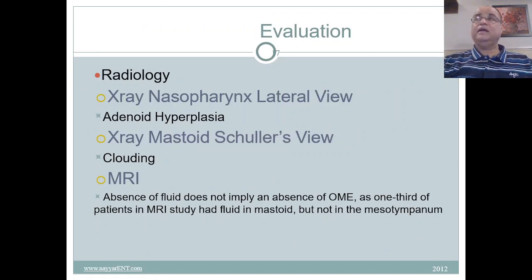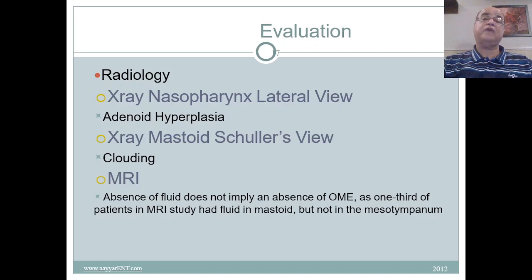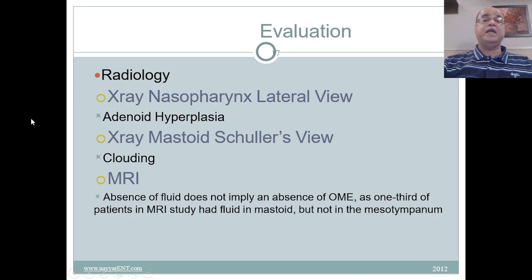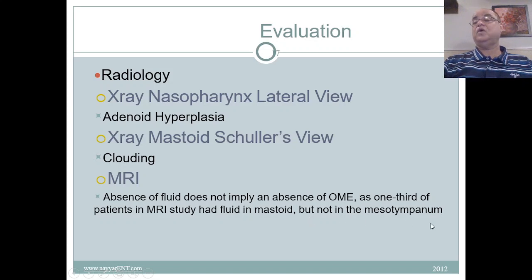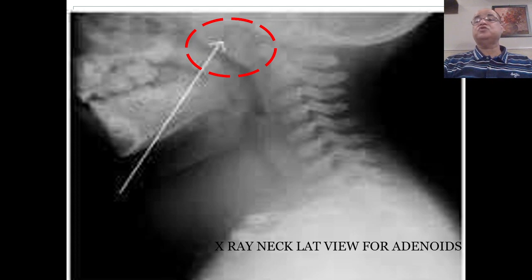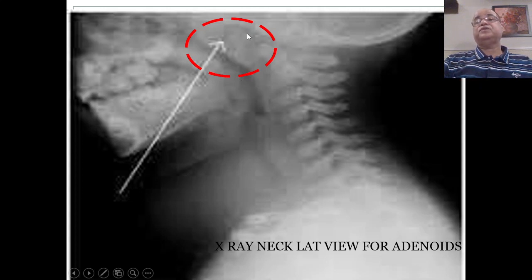In acoustic reflectometry, an acoustic otoscope measures reflected sound from the tympanic membrane — the louder the reflected sound, the greater the likelihood of middle ear effusion. If adenoid hypertrophy is suspected, X-ray nasopharynx lateral view is requested, which will show if the adenoids are hypertrophied. X-ray mastoid Schuller's view may show clouding of mastoid air cell systems because the fluid involves not only the middle ear but also the mastoid. MRI can show fluid in the middle ear, though in one third of patients there may be fluid in the mastoid but not in the mesotympanum.